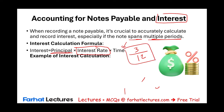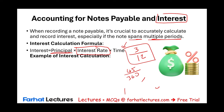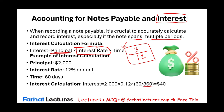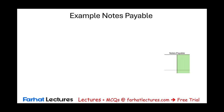We typically use 360 days — called the banking denominator — because it gives rounder numbers, though 365 is the actual days in a year. Always read the instructions to know which to use. For example: we borrowed $2,000 at 12% for 60 days. Interest = $2,000 × 12% × (60/360) = $40.